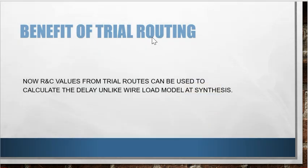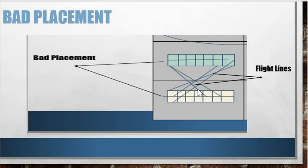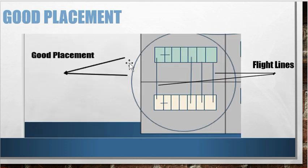So what is the benefit of using trial routing? We know that during synthesis we used to calculate the delay using wire load model. But now since trial routing is done, we can take the RNC values of trial routes to calculate the delay, which will be much more accurate than using the wire load model. So after global placement, if you see your flight lines, basically flight lines show the logical connectivity. So if your flight lines are looking zigzag or messy, then you can understand that it is a bad placement. But if your flight lines are much cleaner, then it is a good placement.